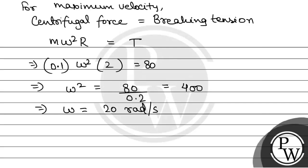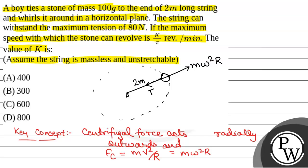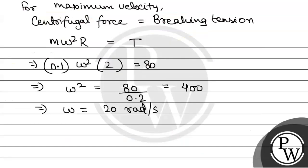Now, we have been given the maximum speed which the stone can revolve is k by pi revolution per minute. So we will change it in revolution per minute.